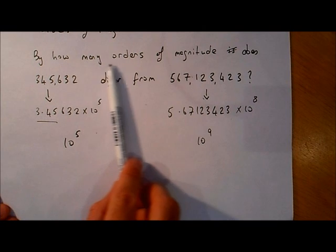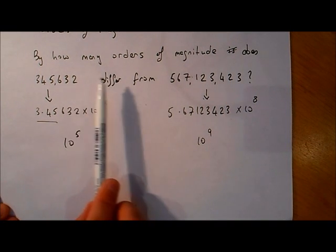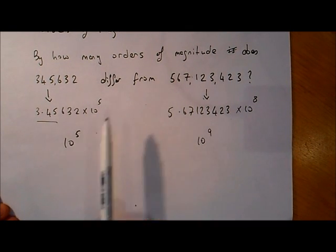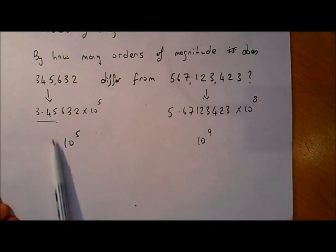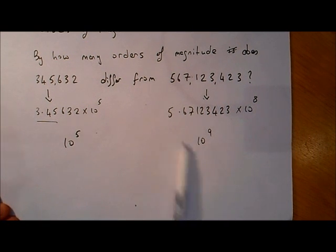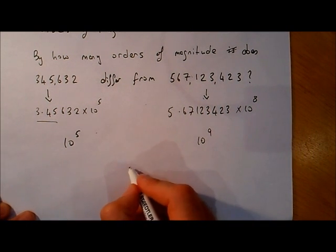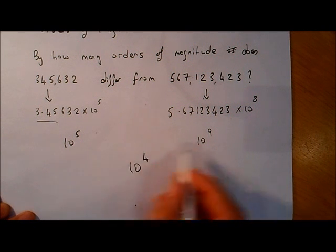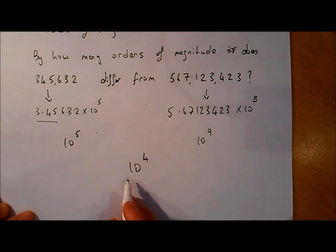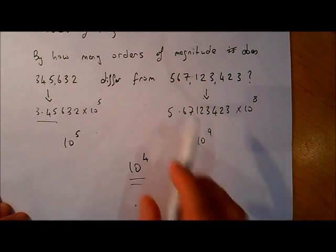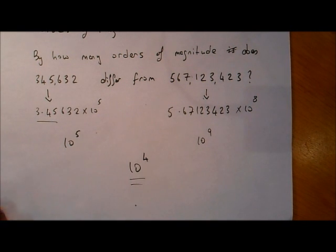Going back to the question: by how many orders of magnitude does this number differ from that? The order of magnitude of the first is 10 to the power of 5, and the second is 10 to the power of 9. They differ by 10 to the power of 4, since 9 minus 5 equals 4. So the answer is 10 to the power of 4.